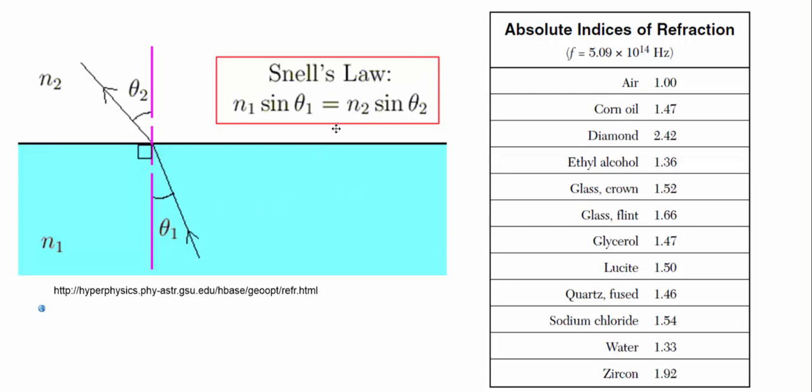Once you know what medium it begins in, maybe that will be n1, you look at your tables that are usually provided and figure out what that n1 is. And then you look at what the new material it's going into is.